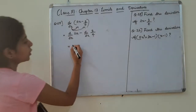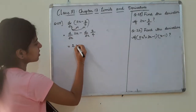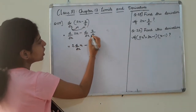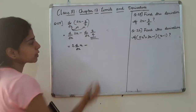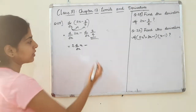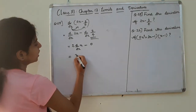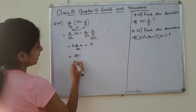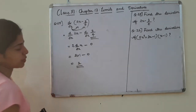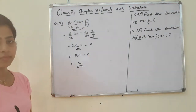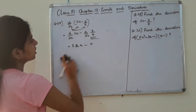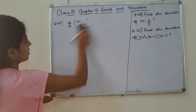Okay, so 2 is a constant. D by dx of x minus 3 by 4. There is a constant — derivative of a constant is 0. This is 2 times x to the 1, minus 0. This gives 2. So let's get to the next question.